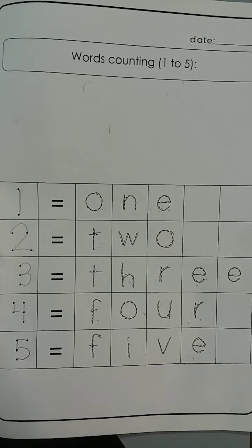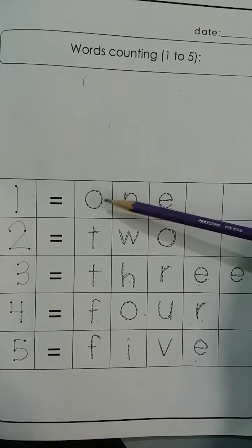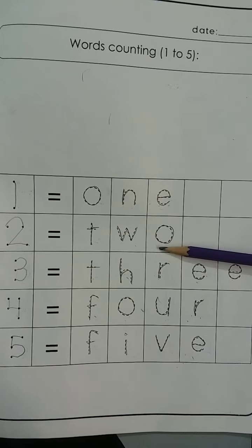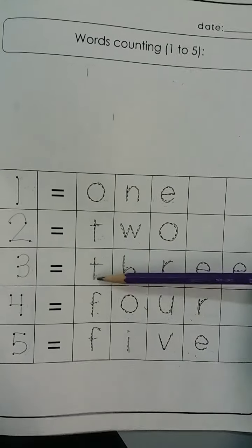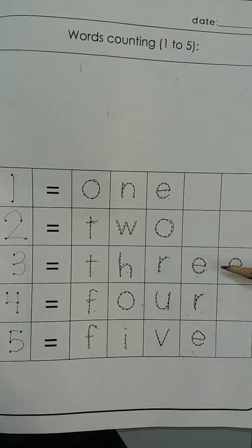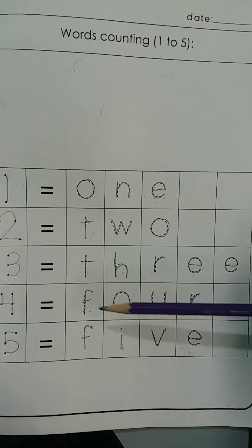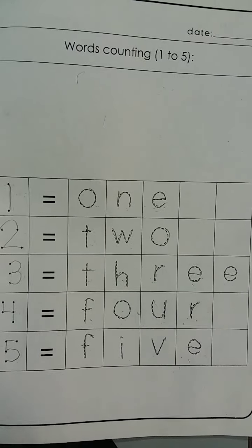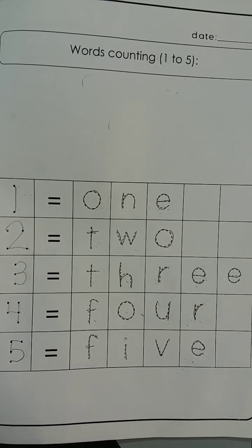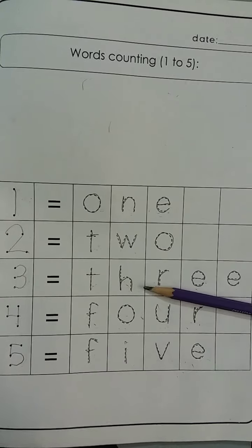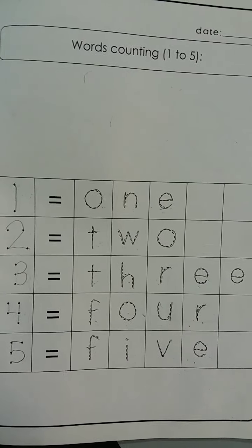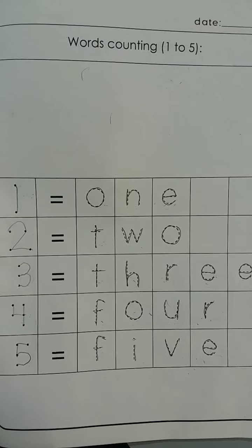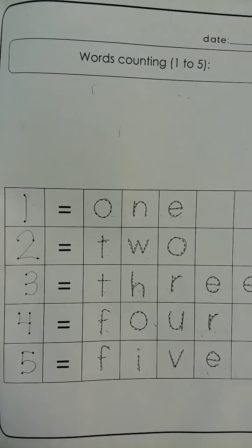Okay kids, look here. Read with me: O, N, E, 1. T, W, O, 2. T, H, R, E, 3. F, O, U, R, 4. F, I, V, E, 5. Okay kids, press words counting in your folders like this. And that is the end of our class. Now I will come back tomorrow with another topic. Till then, take care and goodbye.